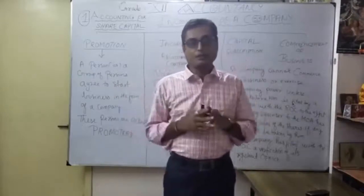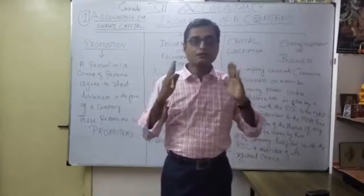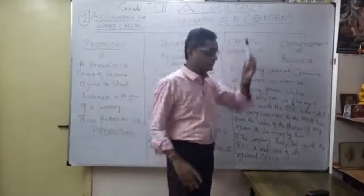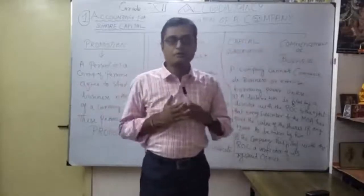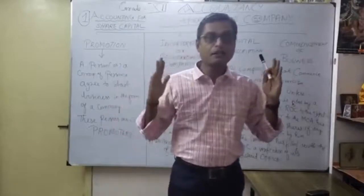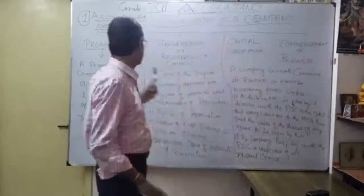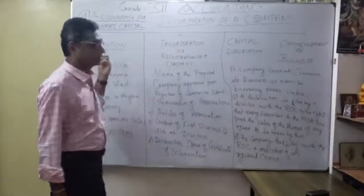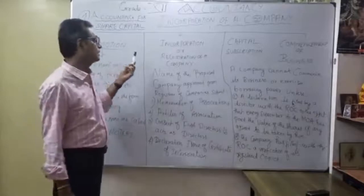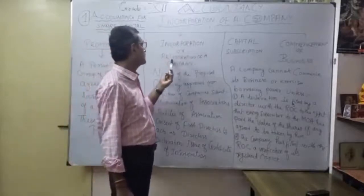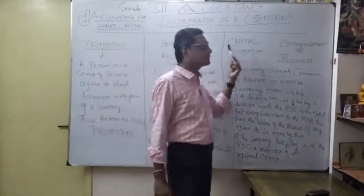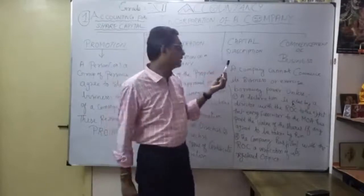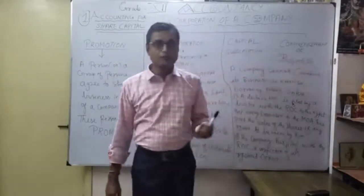Today we are going to discuss how to start a company — that is, incorporation of the company. Under incorporation of the company, we can make four classifications: first, promotion; second, incorporation or registration of the company; third, capital subscription; and fourth, commencement of business.